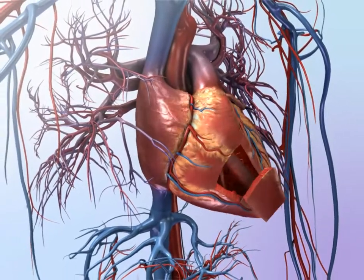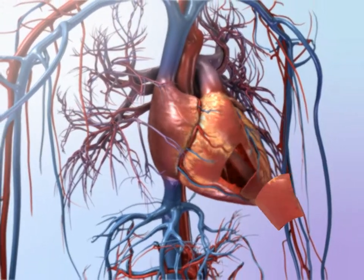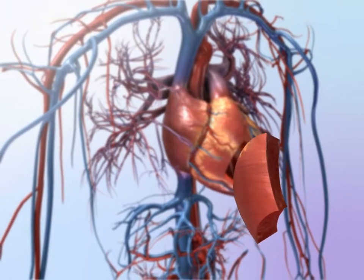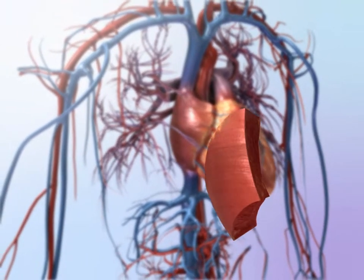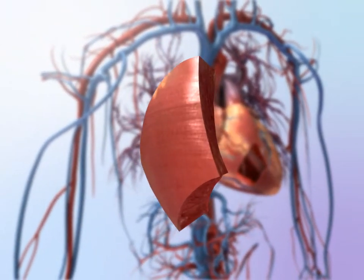Cardiac muscle, which is found only in the heart wall, contracts constantly to pump blood throughout the body. The heart wall is composed of three layers.